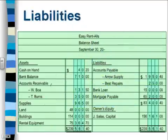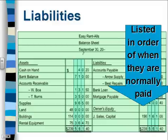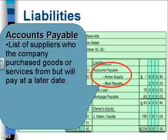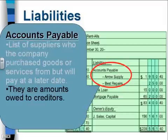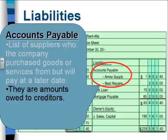Let's talk about liabilities now on the right hand side of the balance sheet. Liabilities are listed in order of when they are normally paid. We're going to put accounts payable first. Accounts payable is a list of suppliers who the company purchased goods or services from but will pay at a later date — we owe them money. They are amounts owed to creditors. Another word for accounts payable is creditor. Accounts receivable is a debtor; accounts payable is a creditor.